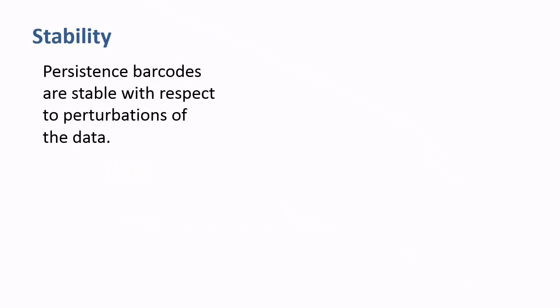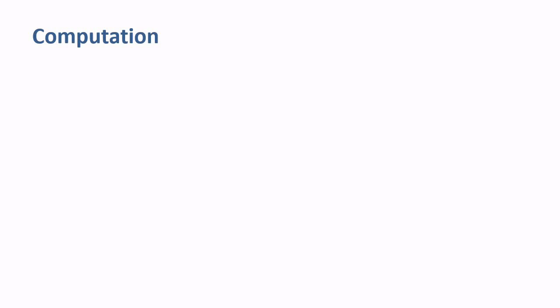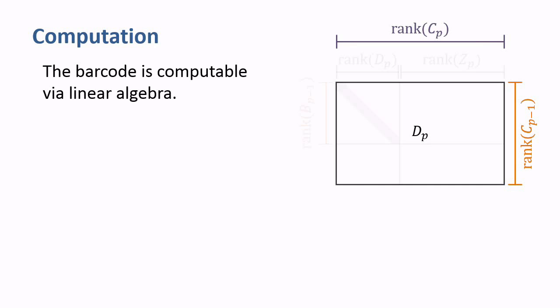A key property of barcodes is that they are stable under perturbations of the data. In other words, if you adjust the points a little bit, the barcode only changes a little bit. This stability is important in applications, in which measurements always have some margin of error.